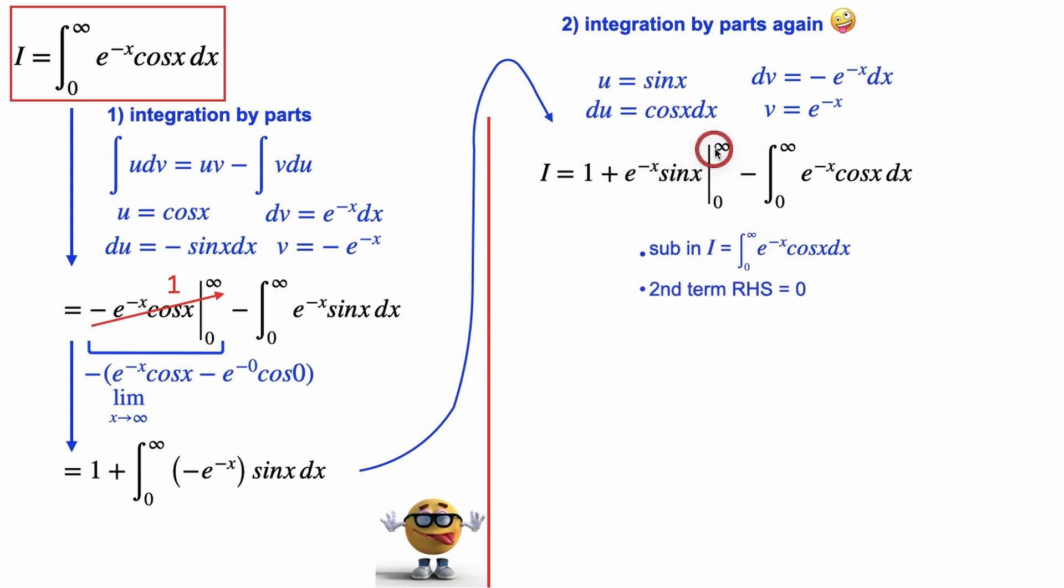Because e to the negative infinity, as x goes to infinity, is 0, and sine of 0 is 0, so this is all 0. So if we plug all that in, what we get is the integral we're trying to solve equals 1 minus the integral that we're trying to solve.